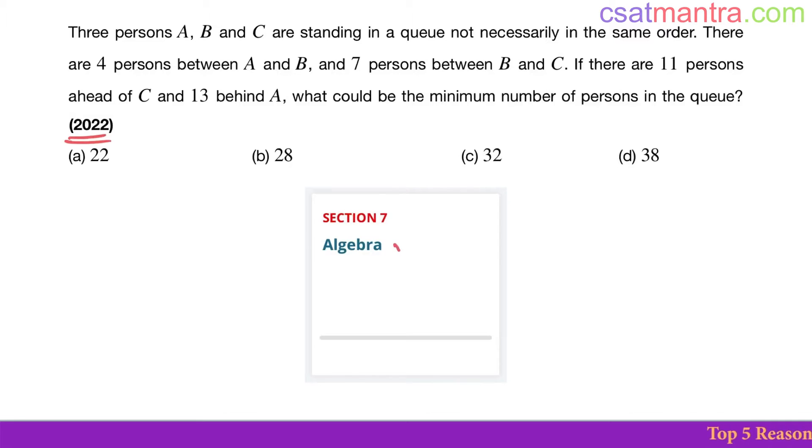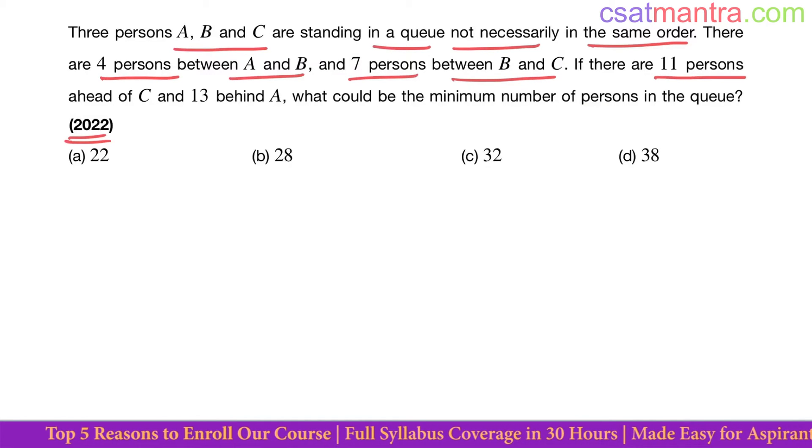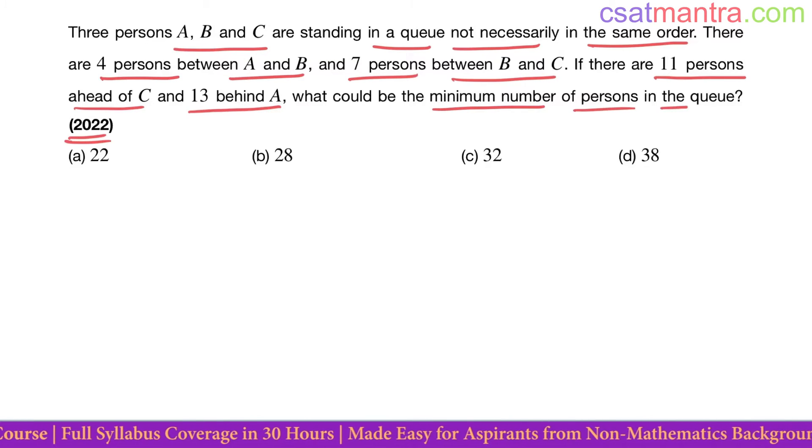2022 question based on algebra. Three persons A, B and C are standing in a queue not necessarily in the same order. There are four persons between A and B, seven persons between B and C. If there are 11 persons ahead of C and 13 behind A, what could be the minimum number of persons in the queue?